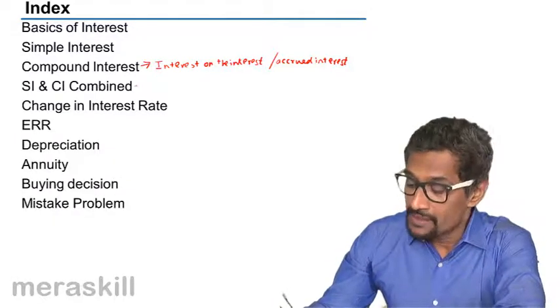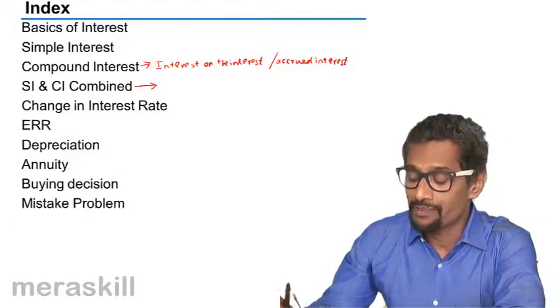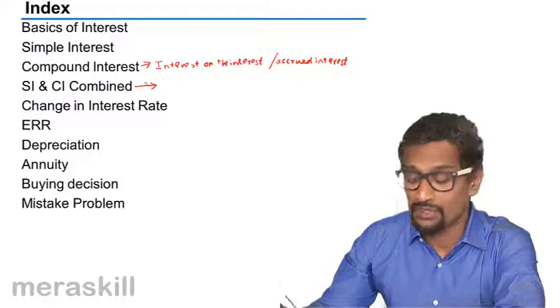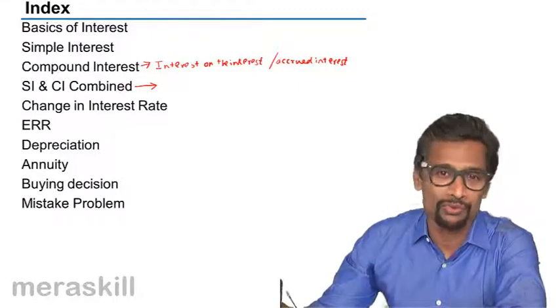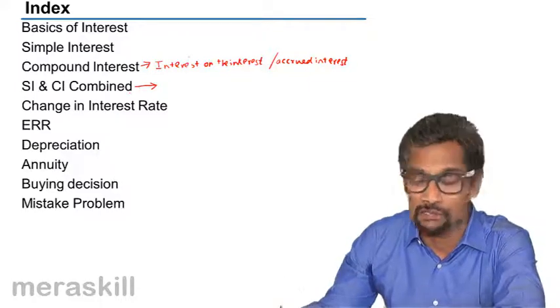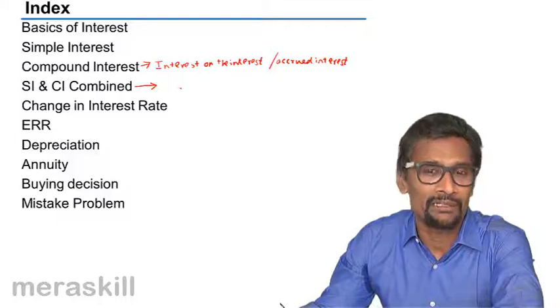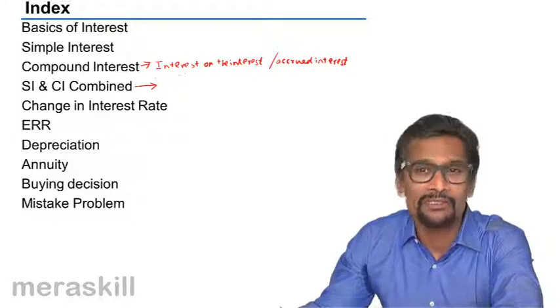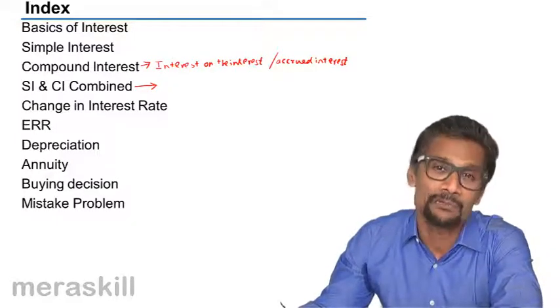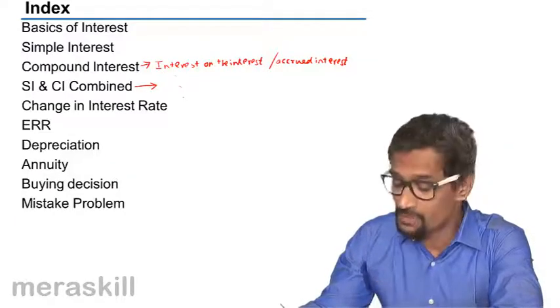Then since these are comparative forms of interest, we have the concept of simple and compound interest combined, just for a comparison between the two so that the candidate can understand in what way it's going to be different. There are certain problems based on combination of simple interest and compound interest. Maybe the principal remains the same, the rate being the same, there is a difference in the compound and simple interest, hence what is the principal, problems similar to that.